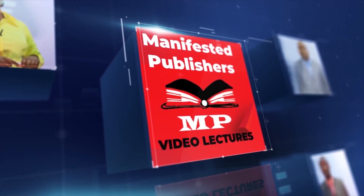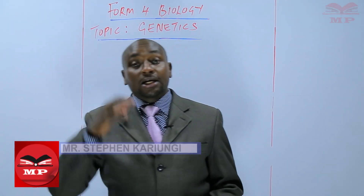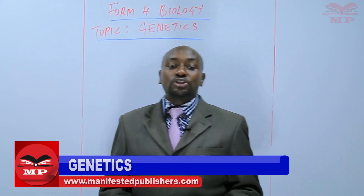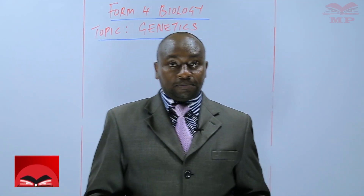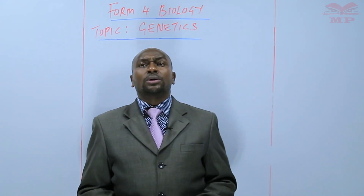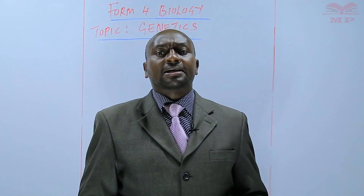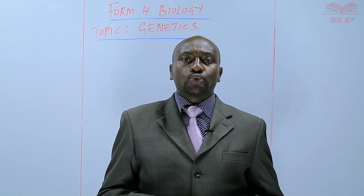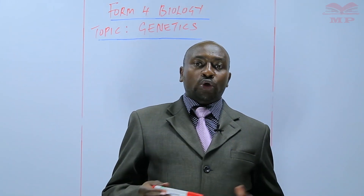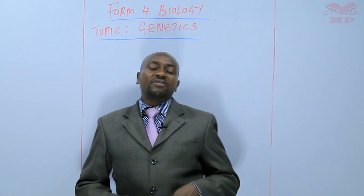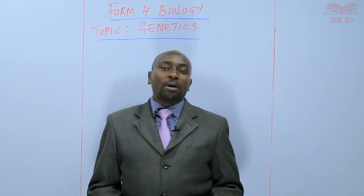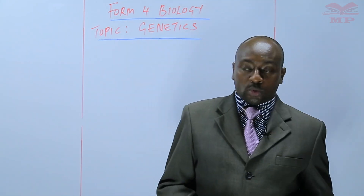Welcome to Manifested Publishers. Welcome learners. My name is Stephen Kariungi, and today we continue with our topic: genetics in Form Four biology. I would like us to discuss how the Punnett square can be applied to solve particular questions — for example, given a situation where you are told to use the Punnett square, how can you go about applying that to answer a question?